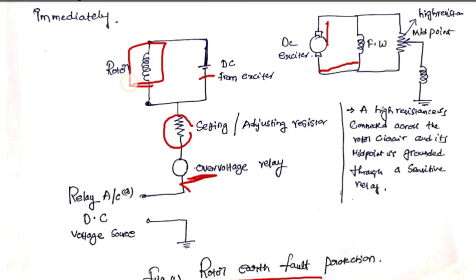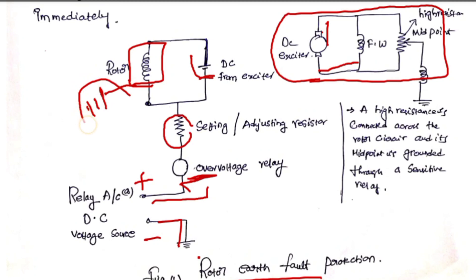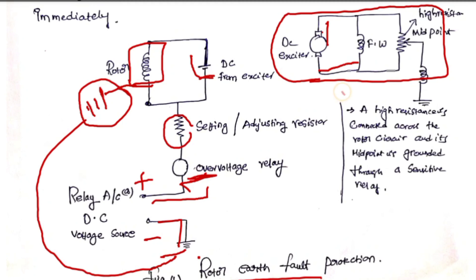This is the rotor field winding, and we connected an exciter. This is the equivalent circuit of the DC exciter and field winding in case of an alternator. When the rotor gets earthed for the first time in large alternators, AC or DC voltage is impressed between the rotor field winding and ground. This is the rotor earth fault protection — large alternators can be protected from various types of rotor earth faults in this way.